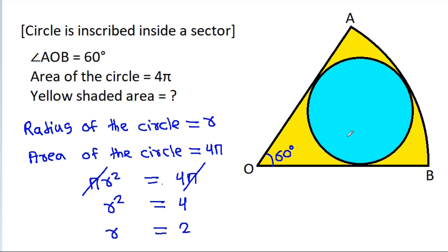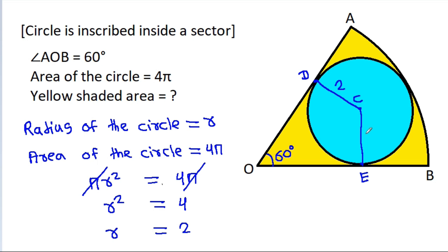Suppose the centre of the circle is C, and suppose this point is D and this point is E. Then CD will be 2, and CE will be 2.